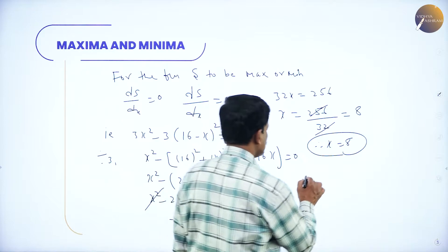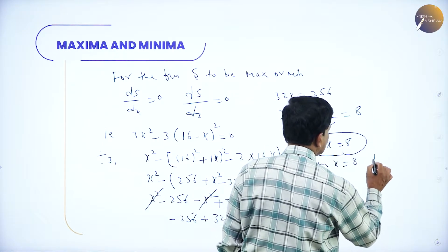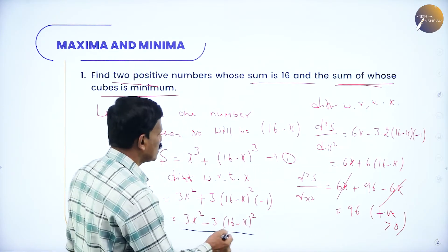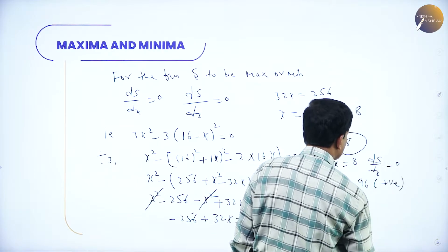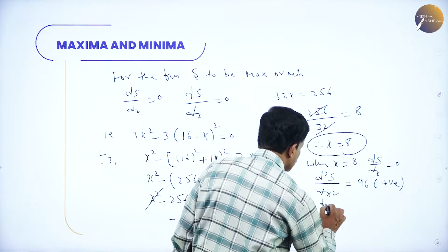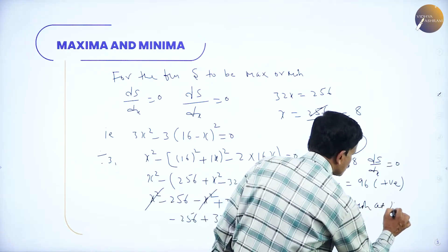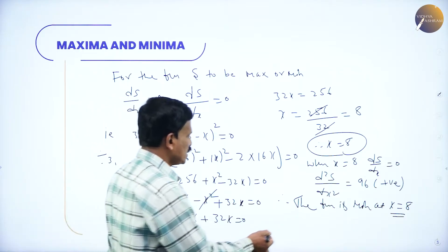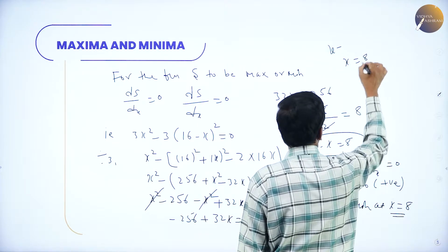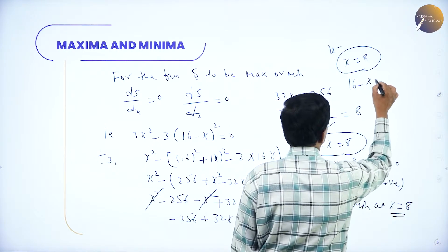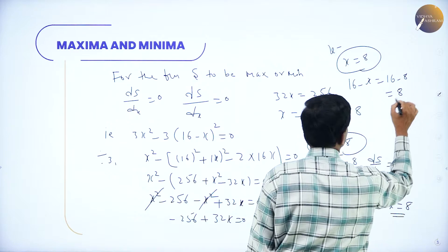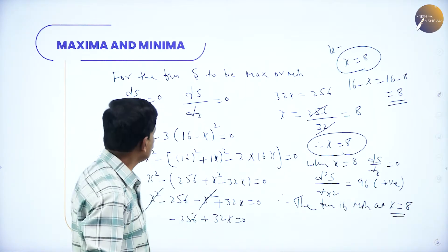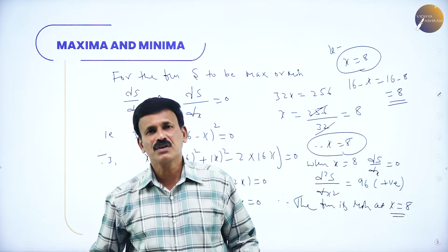At x equals 8, ds/dx equals 0, and d²s/dx² equals 96, which is positive and greater than 0. Therefore the function is minimum at x equals 8. The minimum value is obtained by putting x equals 8: if one number is 8, the other number is 16 minus 8, which is also 8. So the two numbers are 8 and 8. Their sum is 16, and the sum of cubes is minimum.